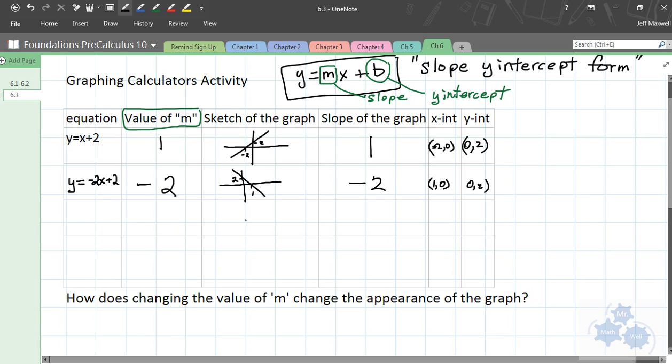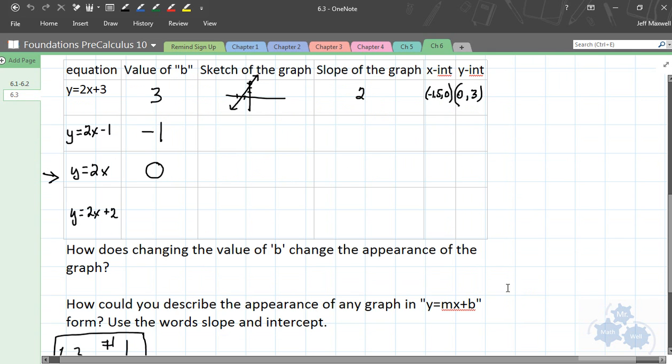What's the X-intercept? We said it was 1, 0. And the Y-intercept? 0, 2. Okay? So, take a few minutes, and you do two more equations on your own. Pick different values of M, and fill in this chart, and then answer this question. Okay? So, take about 5 minutes and do that.